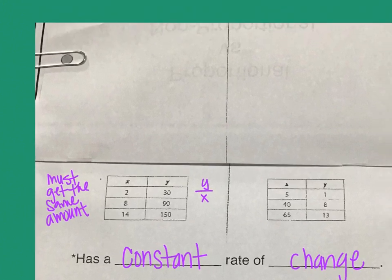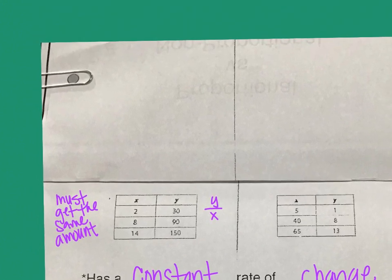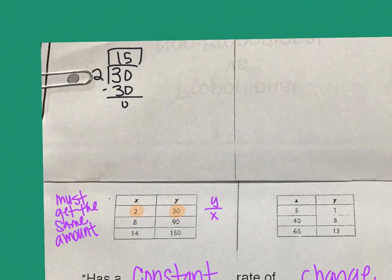So I'm going to scoot up in this upper portion because I have more room to write. This first row, it is 30 divided by 2. So I know exactly that that's 15. So I'm just going to divide it out one time. The number I'm looking for is 15.